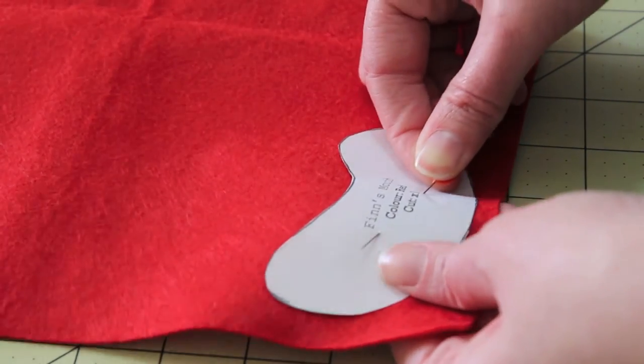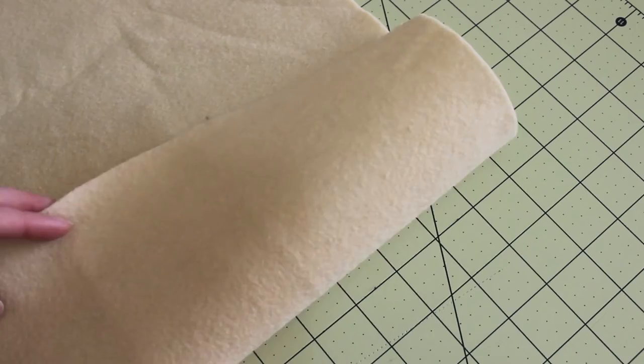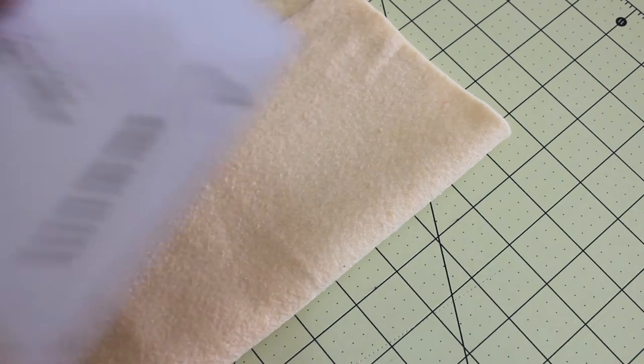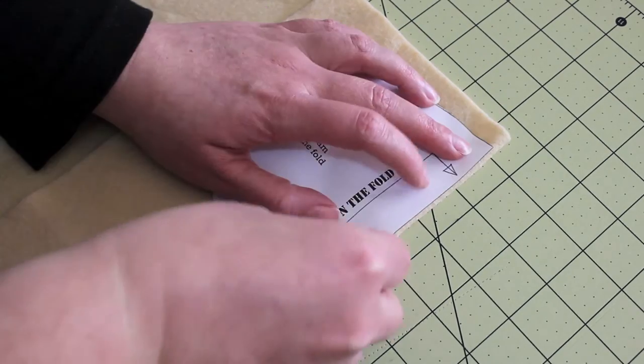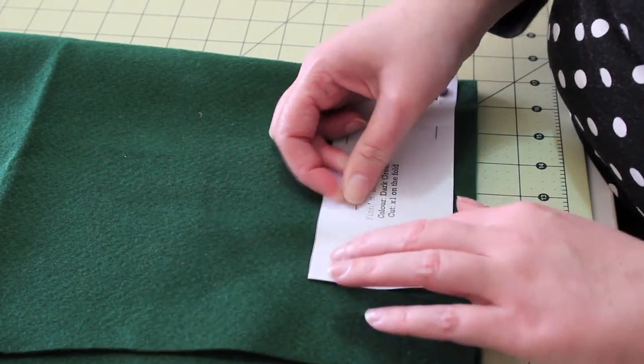Pin each of the templates to the correct colored felt as stated on them. If the template piece says place on the fold, simply fold the piece of felt in half, place the edge of the template with the arrows along the fold and then pin in place. Do the same with the other templates that say the same thing.